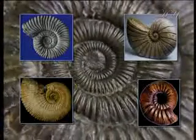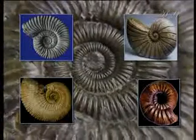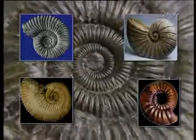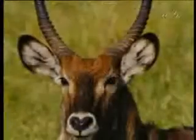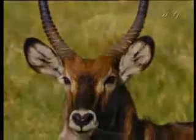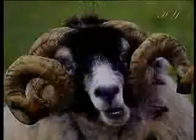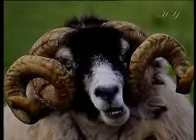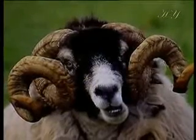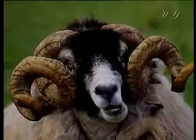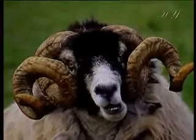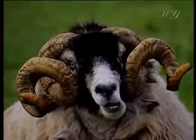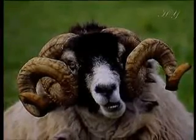Neither is the spiral form in the animal kingdom limited to mollusk shells alone. The horns of such animals as the antelope, the mountain goat and the ram also grow in spirals based on the golden proportion.